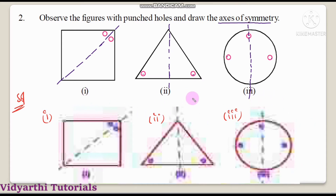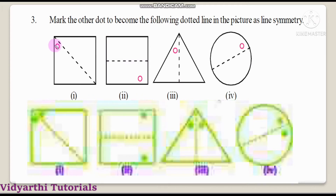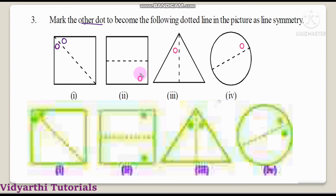Question number 3: mark the other dot to make the dotted line in the picture a line of symmetry. Here we have one dot and a line of symmetry — we have to mark the other dot on the opposite side. For the rectangle figure, dot here means dot on the other side here. For the triangle, dot here means dot there. For the circle, dot here means dot on the other side. We mark the dots according to the line of symmetry.